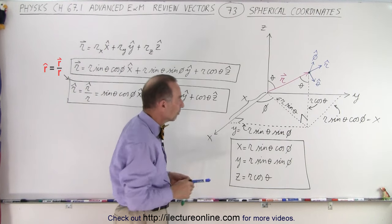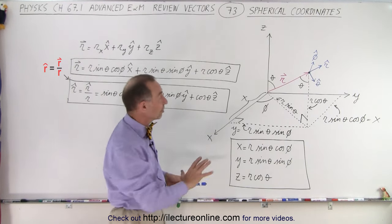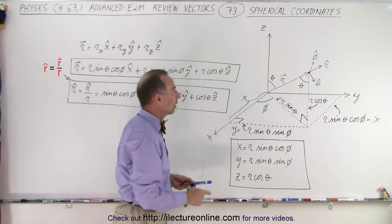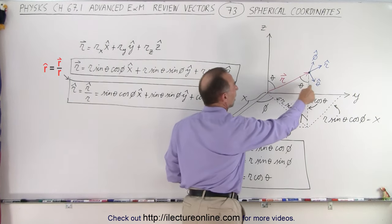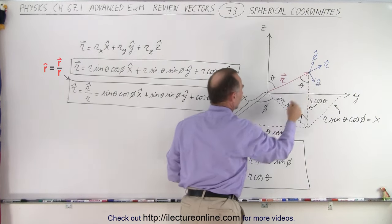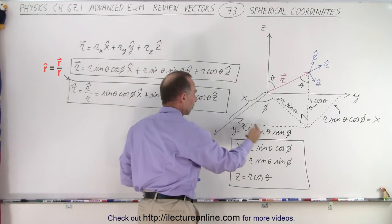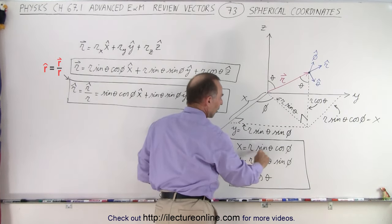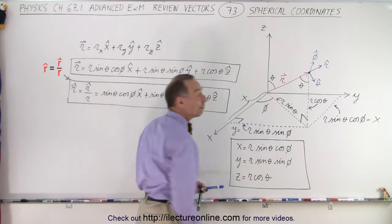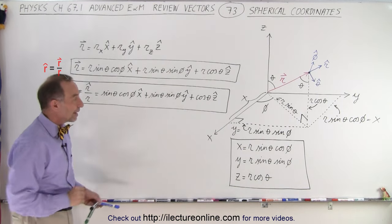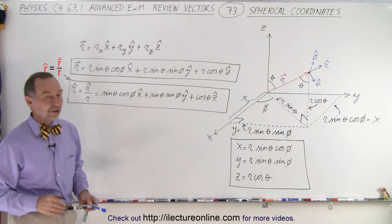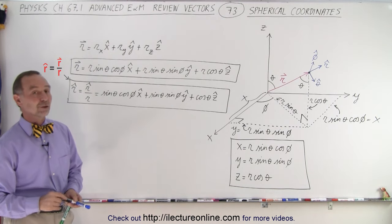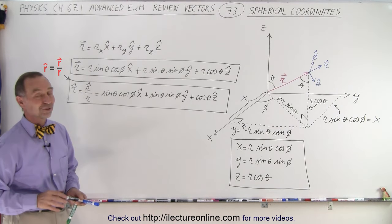We'll work through that in a few more videos, but hopefully this gives a good feel for how spherical coordinates work — how the r vector is defined, how the three unit vectors are defined, and how we express the x, y, and z components of vector r in terms of r, theta, and phi. We'll continue in the next several videos explaining additional aspects of spherical coordinates.